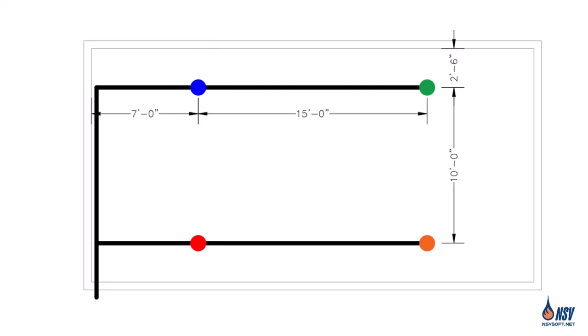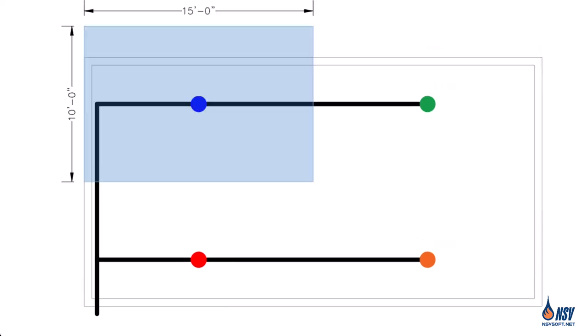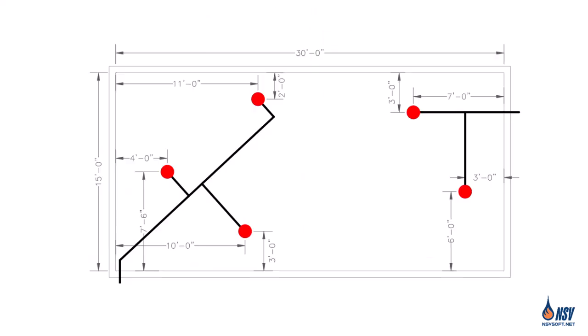Now that we have determined S and L, we can calculate the coverage area. Multiplying S by L, we find that the blue sprinkler covers a total of 150 square feet. If we draw the coverage area of the blue sprinkler, we identify two key points. First, the coverage area of sprinklers is rectangular in shape. Second, the sprinkler is positioned at the center of this rectangle.